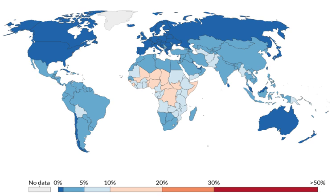Child mortality, also known as child death, refers to the death of children under the age of 14 and encompasses neonatal mortality, under-5 mortality, and mortality of children aged 5 to 14. Many child deaths go unreported for a variety of reasons, including lack of death registration and lack of data on child migrants. Without accurate data on child deaths, we cannot fully discover and combat the greatest risks to a child's life.